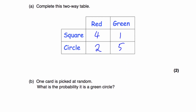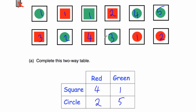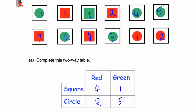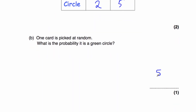Part B says: one of the cards is picked at random. What's the probability it's a green circle? There are 12 cards altogether. In terms of green circles, we've got five. So the probability of picking a green circle will be five out of twelve — five twelfths — because there are five green circles and twelve cards altogether.